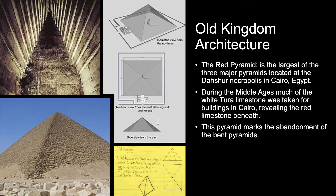The Red Pyramid is the largest of the three major pyramids located at the Dahshur Necropolis in Cairo, Egypt, named for the rusty reddish hue of its red limestone. It is the third largest Egyptian pyramid after those of Khufu and Khafra at Giza, and is believed to be Egypt's first successful attempt at constructing a true smooth-sided pyramid. The pyramid was originally cased with white Tura limestone, but only a few of these stones remain at the base corners, as during the Middle Ages much of the white limestone was taken for buildings in Cairo, revealing the red limestone underneath.